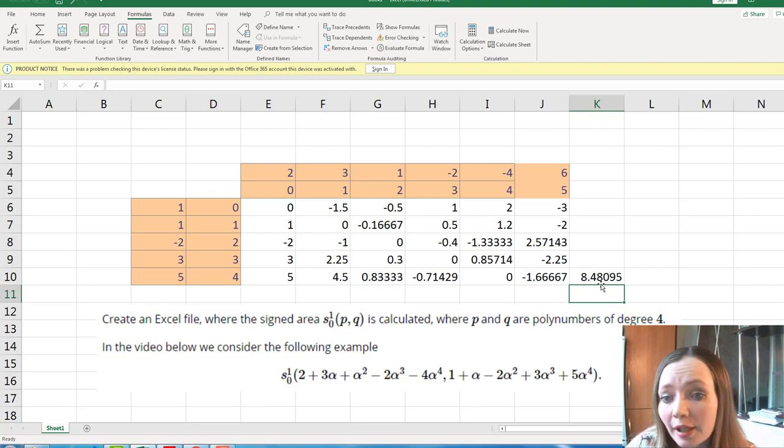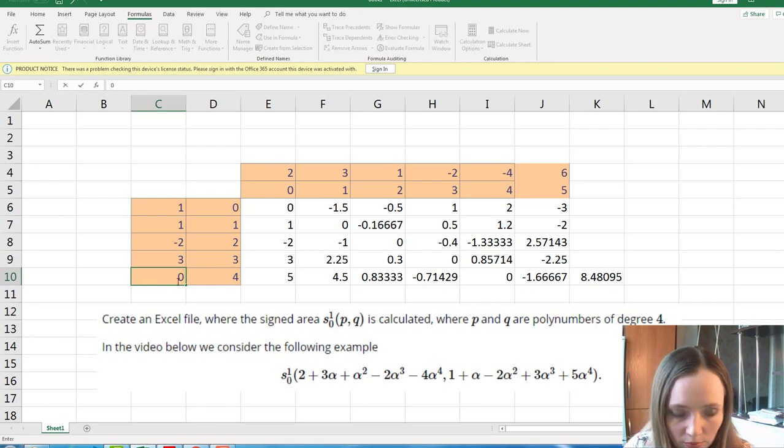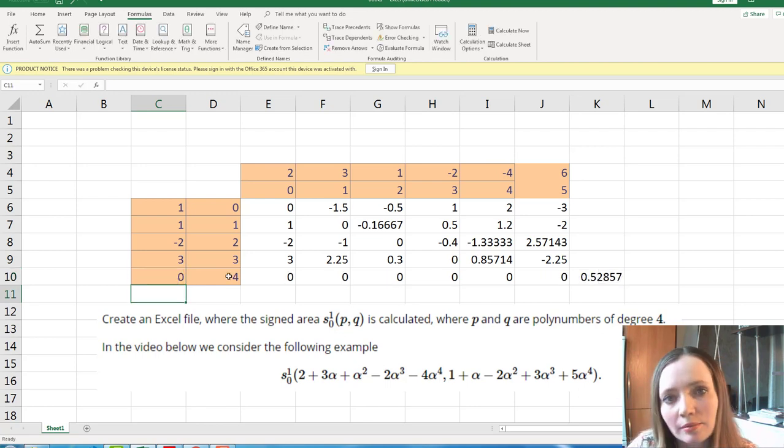And finally, if you have, for example, this table. But you have polynomials of lower degrees. For example, here you have only alpha to the three. Then you just put here zero. And that's it. You have the signed area of corresponding curve with lower degree polynomials.